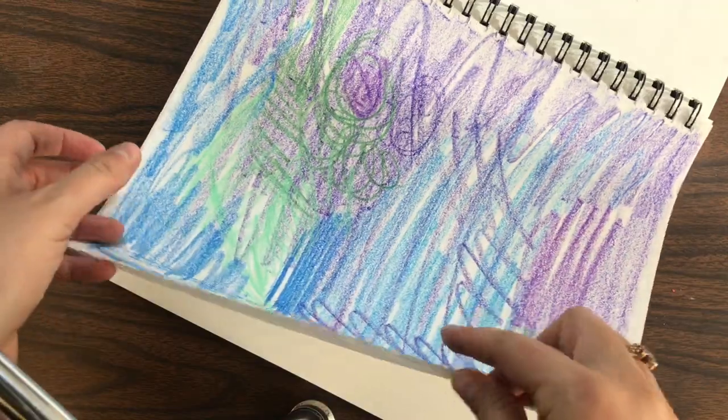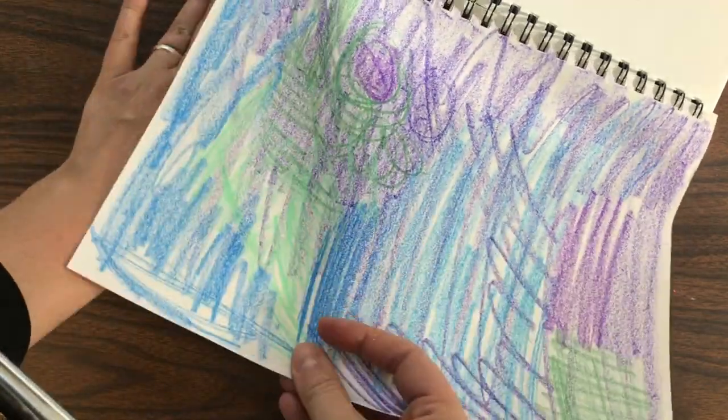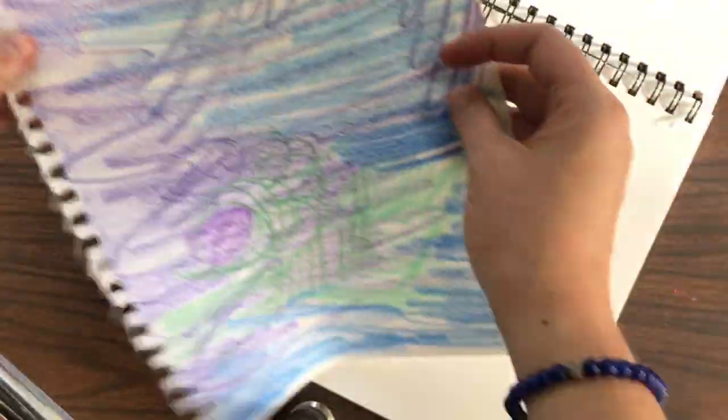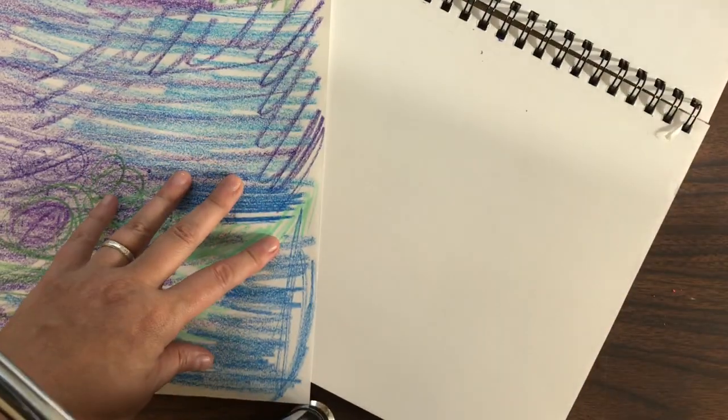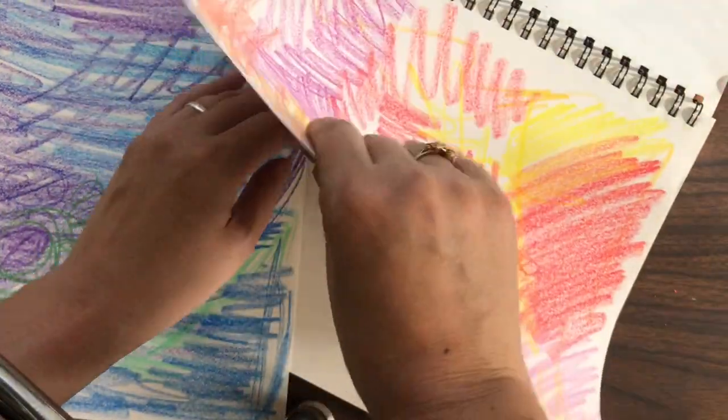As you see, now I have my page of cool colors. I'll rip it right out of there. And my page of warm colors. I'll also rip this out of here.